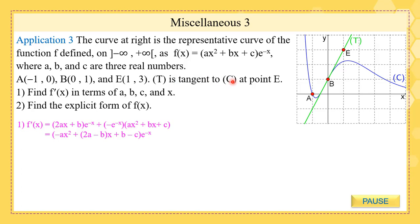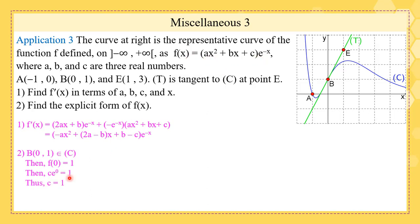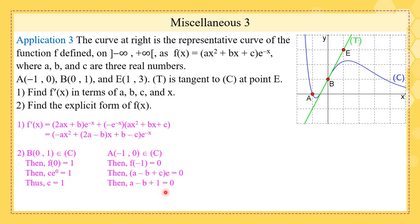For the explicit form, we use the coordinates of A, B, and E, and the tangent information. Since B(0, 1) belongs to C, f(0) = 1. Replacing x by 0 in f(x): c·e⁰ = 1, so c = 1. Always begin with points where the abscissa is 0 as these are the easiest.